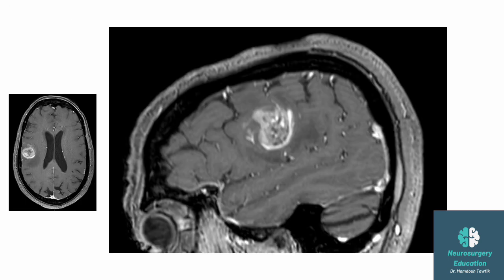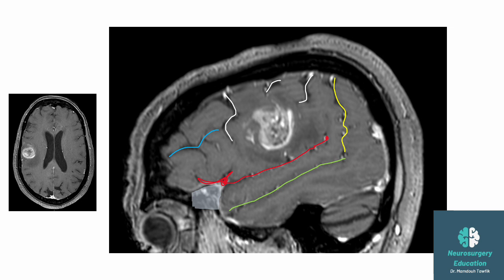Now we will analyze the location of the lesion. First, identify the sylvian fissure. If it's very compressed, you can start by identifying the bone of the sphenoid ridge to find the beginning of the sylvian fissure. Below is the superior temporal sulcus; above is the inferior frontal sulcus, which intersects with the pre-central sulcus. More posteriorly is the central sulcus and then the post-central sulcus. Behind the sylvian fissure is the intermediate sulcus of Jensen. The lesion is located below the central sulcus, so it is in the sub-central gyrus, which would affect contralateral facial sensation and movement with an upper motor neuron type deficit.